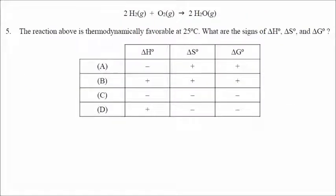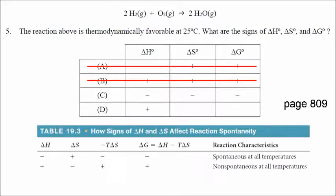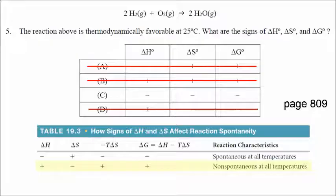Number five: this reaction is thermodynamically favorable, so delta G is negative — the correct answer is either C or D. Looking at the signs, we're going from three moles of gas to two moles of gas, so delta S is negative. If delta H were positive with a negative delta S, the reaction would not be favored at any temperature. Therefore, this reaction must be exothermic. Burning hydrogen gas releases energy, so it's an exothermic reaction with a negative delta S and a negative delta G.